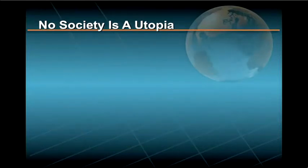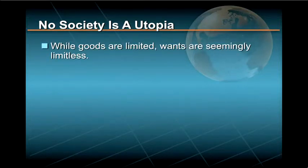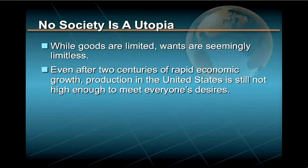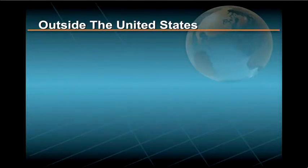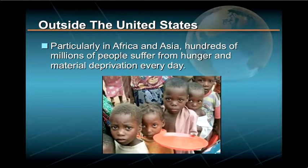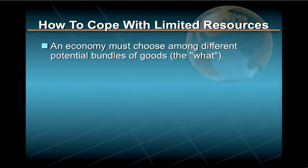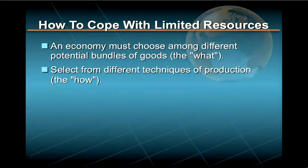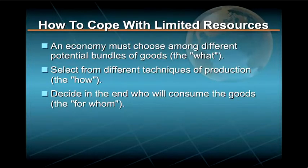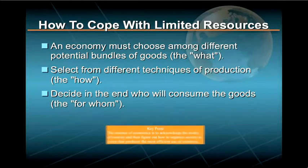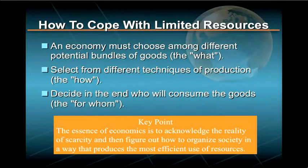Clearly, no society has reached such a utopia of limitless possibilities. Instead, while goods are limited, wants are seemingly limitless. Indeed, after two centuries of rapid economic growth, production in the United States is still not high enough to meet everyone's desires. And outside the United States, particularly in Africa and Asia, hundreds of millions of people suffer from hunger and material deprivation every day. Faced with the undeniable fact that goods are scarce relative to wants, an economy must decide how to cope with limited resources. It must choose among different potential bundles of goods – the what – select from differing techniques of production – the how – and decide in the end who will consume the goods – the for whom. The essence of economics is to acknowledge the reality of scarcity, and then figure out how to organize society in a way that produces the most efficient use of resources.